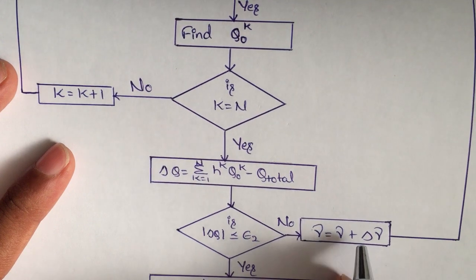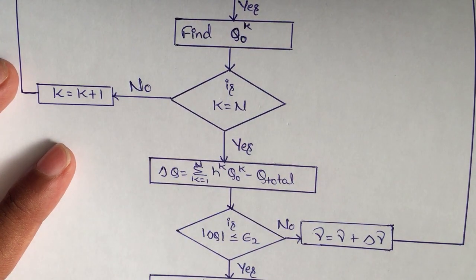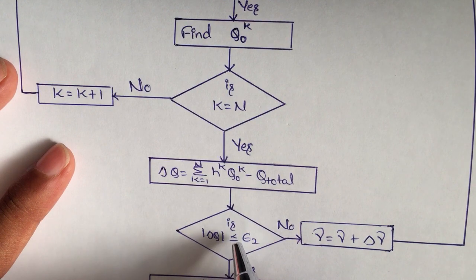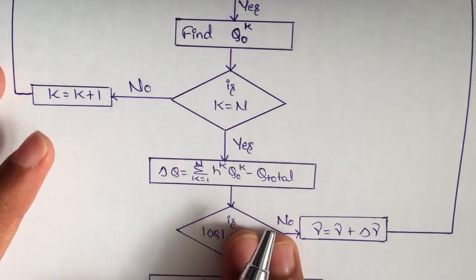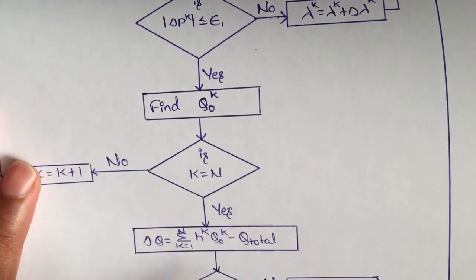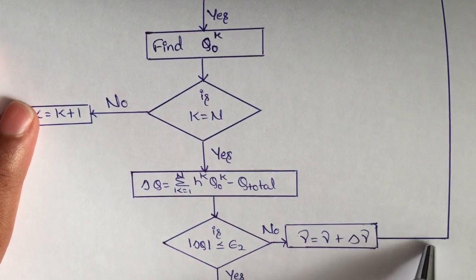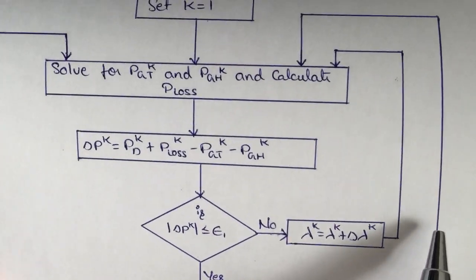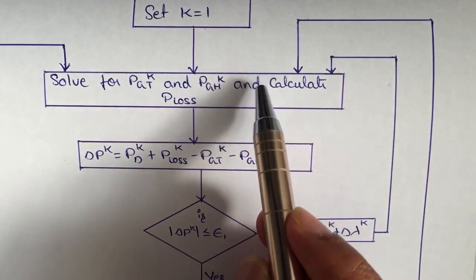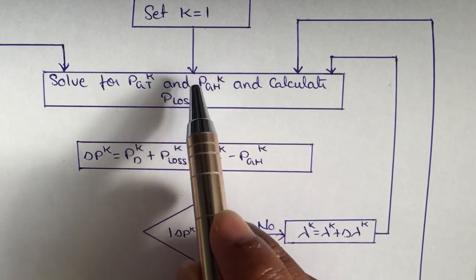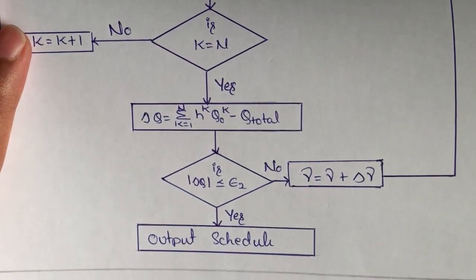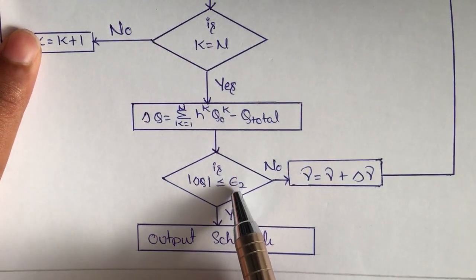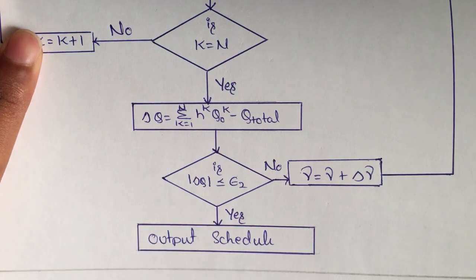If delta q is not less than epsilon 2, we increase gamma by delta gamma (gamma = gamma + delta gamma), and move back to recalculate PGT k, PGH k, and P loss to continue the iteration. If delta q is less than epsilon 2, we stop the loop and check the output schedules.